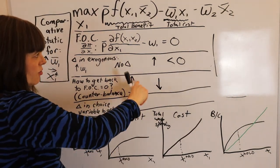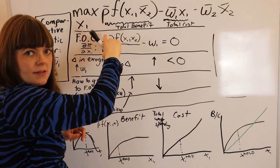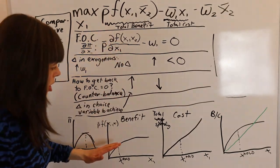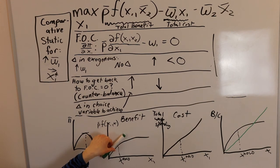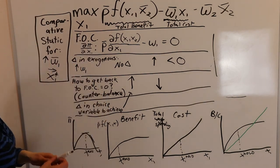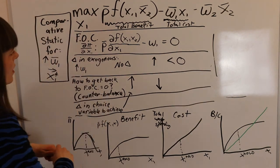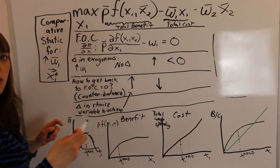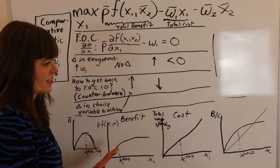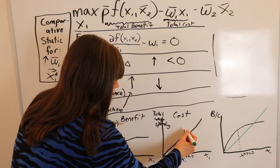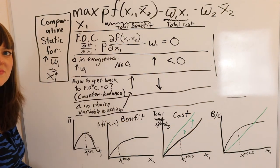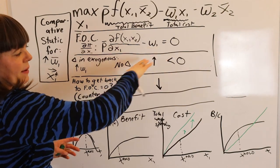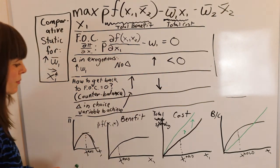One option is to increase the marginal benefit. Let's come down to our benefit graph — we know marginal benefit equals the slope of the tangent. It's always helpful to show how an increase in W1 changes one of the graphs: the increase in W1 is going to rotate the cost graph up. That's what put us out of equilibrium, and now we're trying to get back in equilibrium.